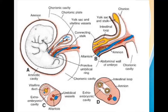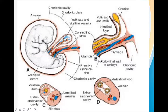Reviewing the diagram: the amnion surrounds the amniotic cavity where the embryo is developing. The connecting stalk is the future umbilical cord. Inside the umbilical cord there is Wharton's jelly and two arteries and one vein. These are some of the important points about the umbilical cord.